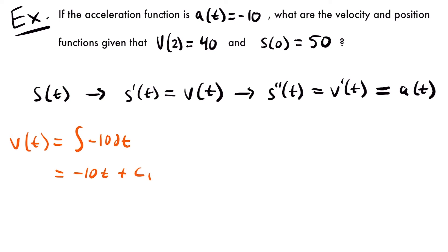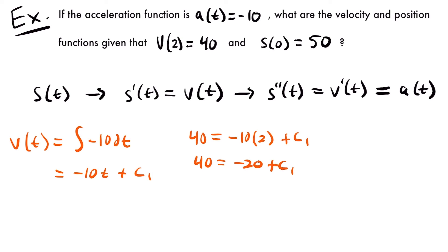Taking the integral of the acceleration function, v of t equals the integral of negative 10 dt, which equals negative 10t plus c sub 1. Using the initial condition v(2) equals 40: 40 equals negative 10 times 2 plus c sub 1, giving 40 equals negative 20 plus c sub 1, so c sub 1 equals 60. Our particular velocity function is v of t equals negative 10t plus 60.